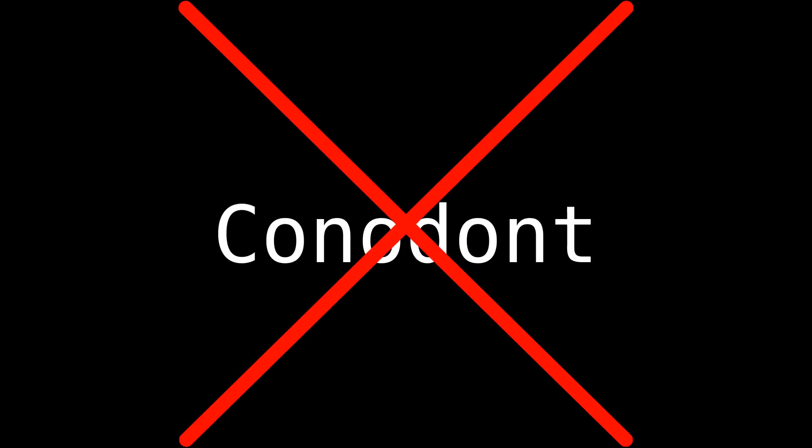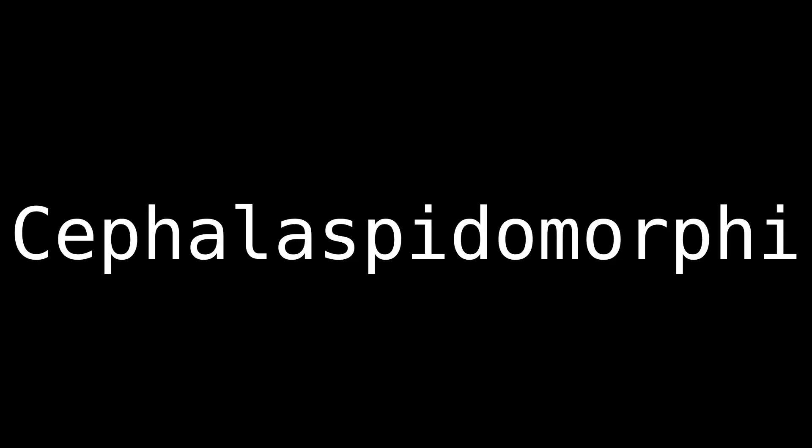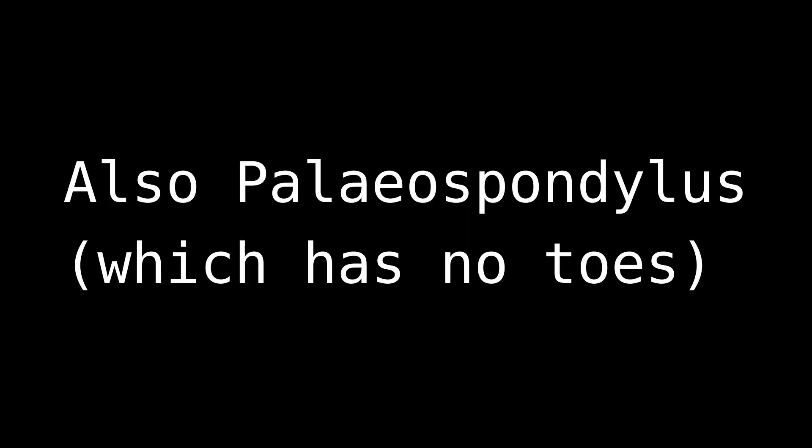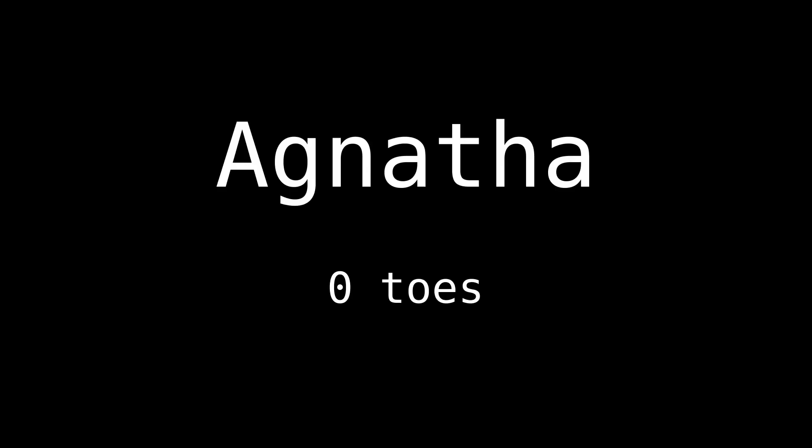Yunnanozoon — all dead. Conodont — all dead. Pteraspidomorphi — all dead, so again, doesn't count. Fulodonti — also dead. Anaspidomorphae — all dead. Cephalaspidomorphae are pretty much all dead, except possibly Lampreys. But even if Lampreys were included, they don't have any legs, don't have any feet, don't have any toes, so zero. In total, Agnatha has zero toes.